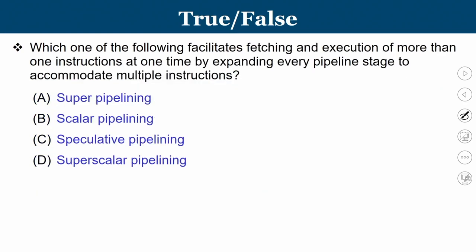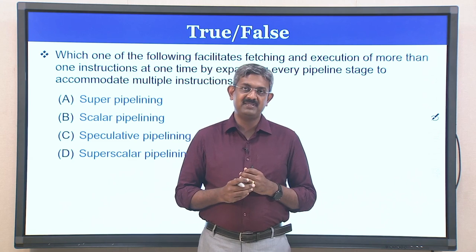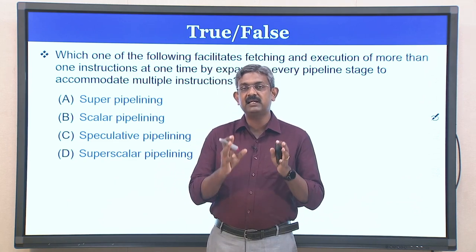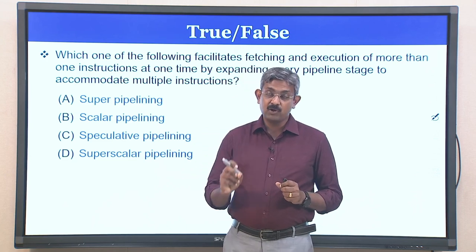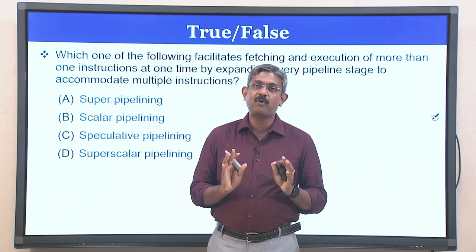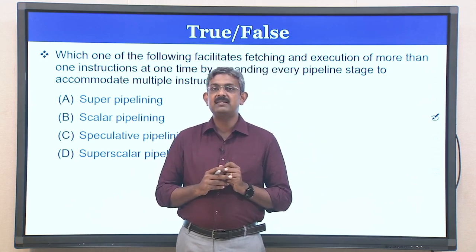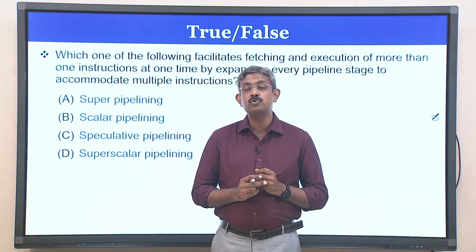Now let us go into the next question: which one of the following facilitates fetching and execution of more than one instruction at one clock cycle by expanding every pipeline stage to accommodate multiple instructions? The choices given are: super pipelining, scalar pipelining, speculative pipelining, and superscalar pipelining. Let us understand this — we are talking about different potential ways to improve IPC, specifically a scenario where the pipeline can fetch and execute more than one instruction in a given clock cycle.